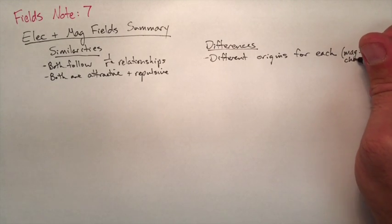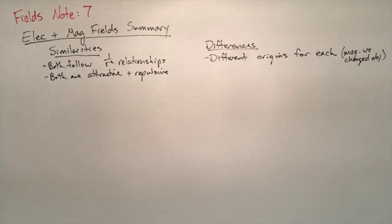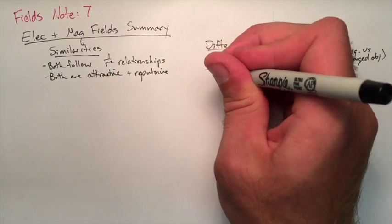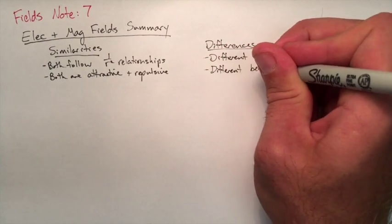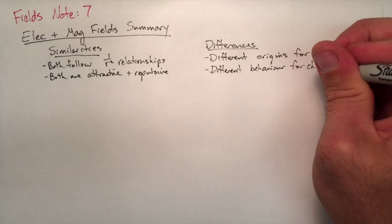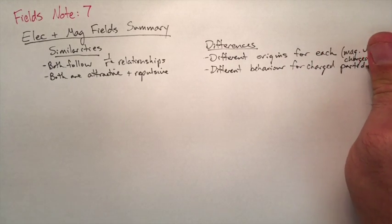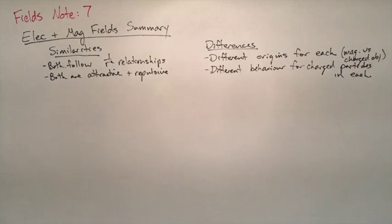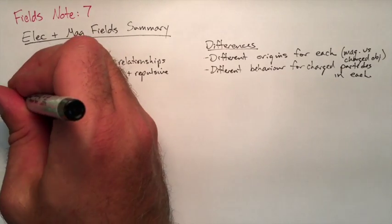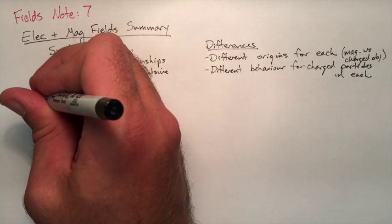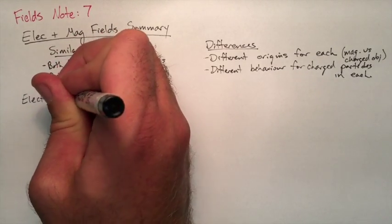The differences are they have different origins. So magnetic fields come from magnets. Charged objects can give you electric fields. And also, the behavior of a charged object in each of these fields is different. So the diagrams that we're going to draw here is going to display the behavior of those charged particles.